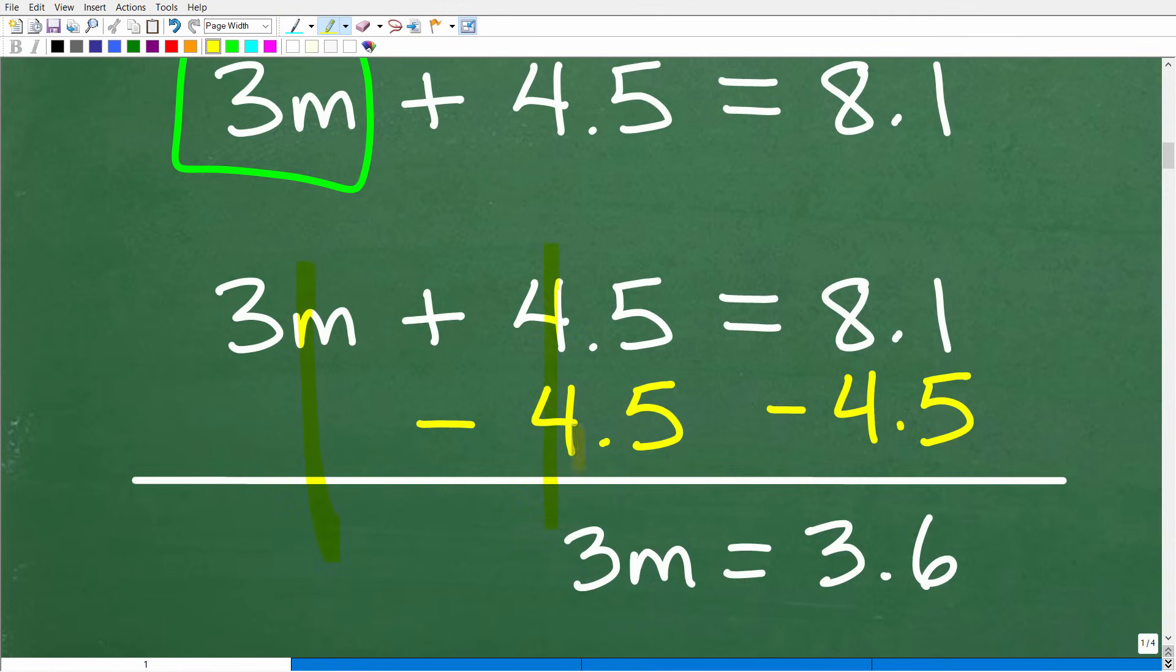Okay, so now let's go ahead and add down in a column manner. So 3m plus nothing is 3m. 4.5 minus 4.5 is zero, okay? So that number now disappears from the left-hand side. There's no need to write that zero right there. And then 8.1 minus 4.5 is 3.6. Now again, feel free to use a calculator. We're not going to be discussing how to add and subtract decimals, but that's what that is equal to.